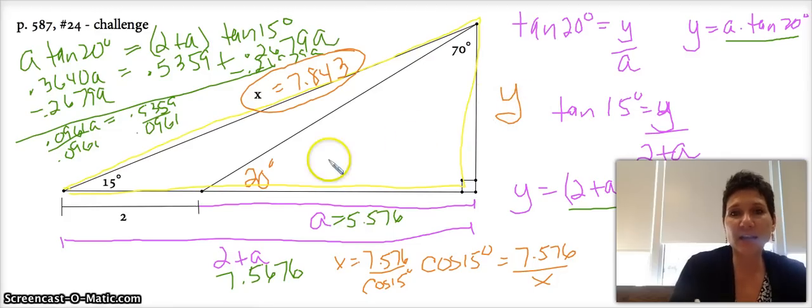Now that we know that they share that side, we created trig equations involving that side. Like we did for the small guy, we did the tangent of 20 is equal to Y over A. For the big guy we did the tangent of 15 is equal to Y over 2 plus A, and we solved each one of those for Y. This one I multiply both sides by A so I got this, this one over here I multiply both sides by 2 plus A, notice I use parentheses because I'm a good math person. And because Y equals this and Y equal that, we were able to set those two equal to each other to find out what A was equal to.